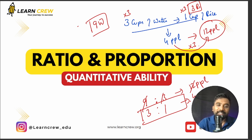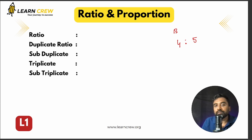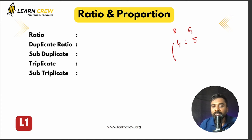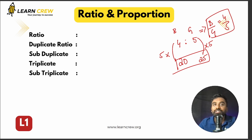Ratio is an exciting area. For example: the ratio of boys to girls in a school is four is to five. That means for every four boys there are five girls. Multiply by five — for every 20 boys there are 25 girls. This ratio can also be written as b/g = 4/5. Both b:g and b/g are exactly the same.